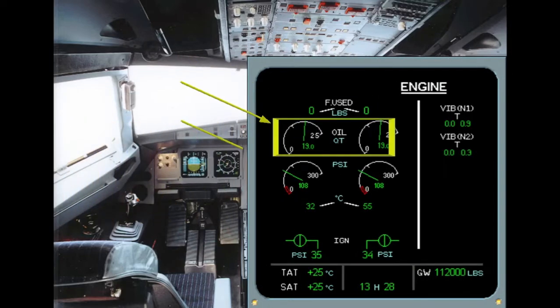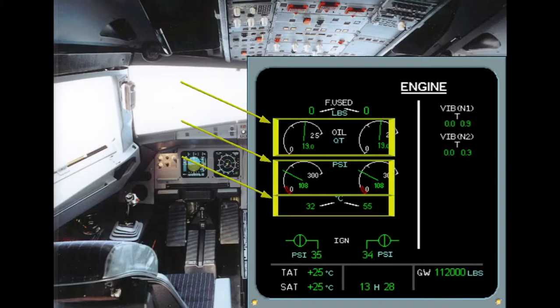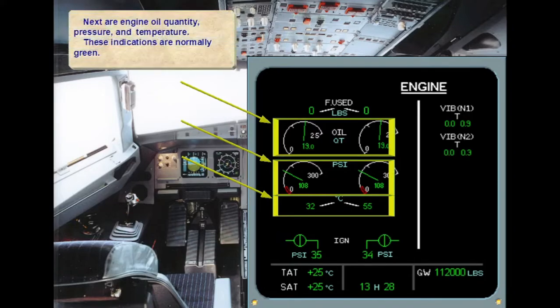Next are engine oil quantity, pressure, and temperature. These indications are normally green. Oil quantity limits are: cold, below 30 degrees Celsius, 10.5 quarts; hot, above 30 degrees Celsius, plus 17 quarts, plus 6 tenths of a quart per hour estimated flight time.